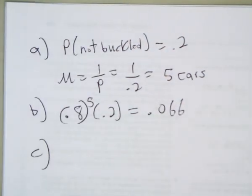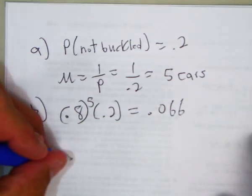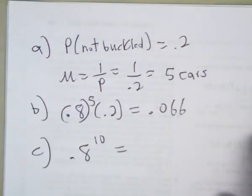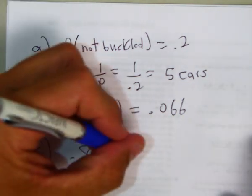In C, they said what's the probability that the first 10 drivers were all wearing their seatbelts. So, 0.8 to the 10th. If we do that, we get 0.107.